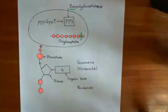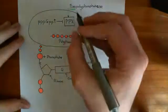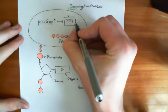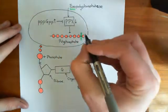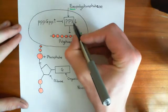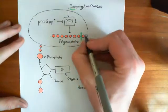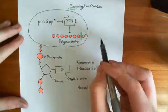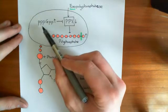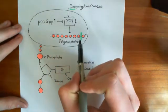So if this enzyme is inhibited by the rising level of pppGpp, then this enzyme's activity goes down. This enzyme breaks down polyphosphates, so if its activity goes down, the polyphosphate level within the cytoplasm goes up. Overall, we can couple a rise in the level of pppGpp to a rise in the level of polyphosphates.